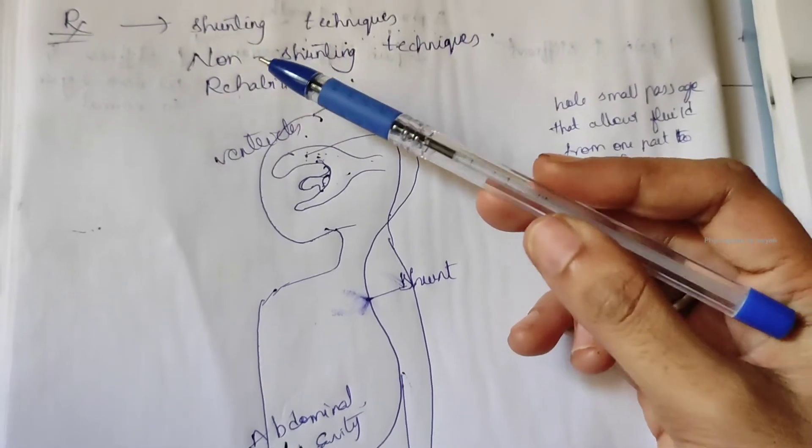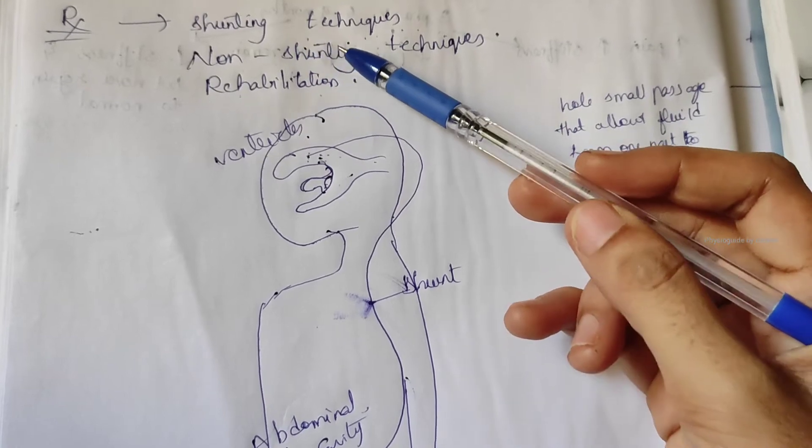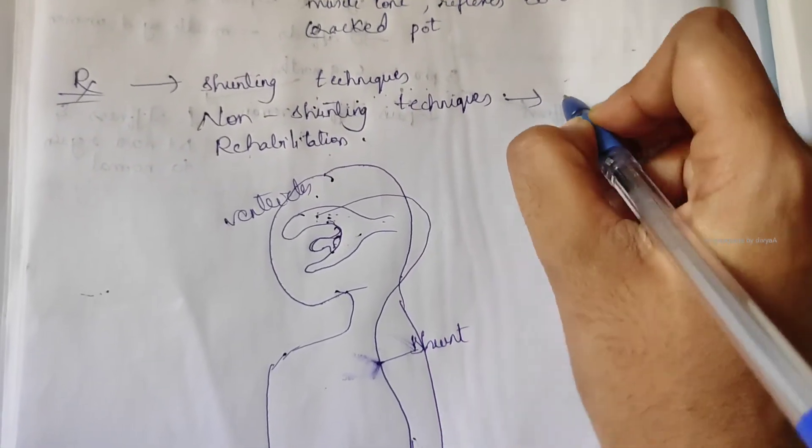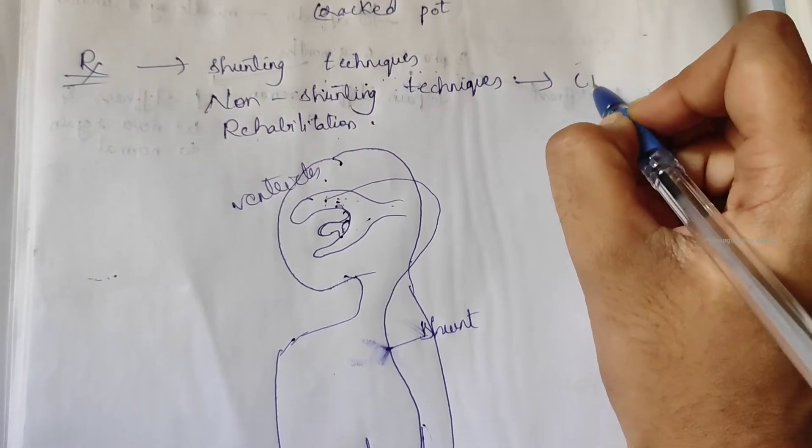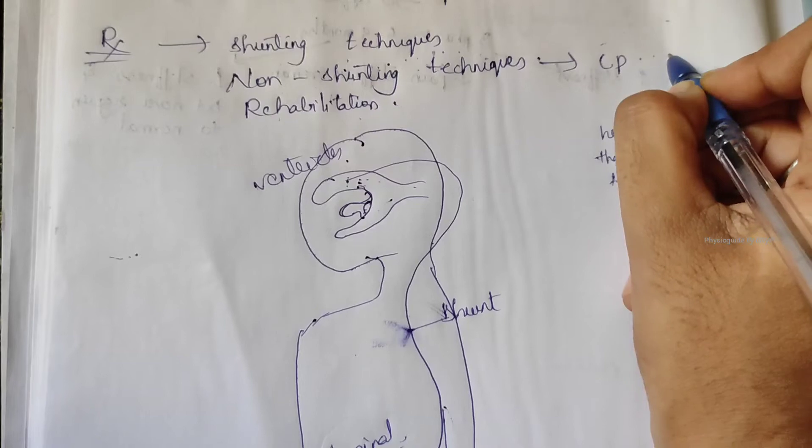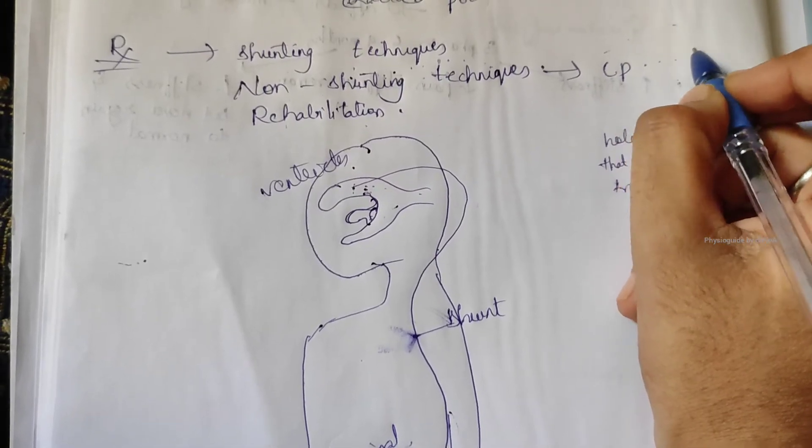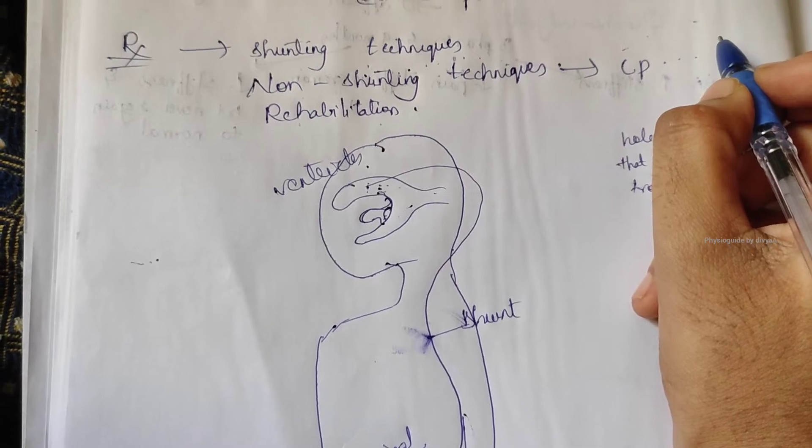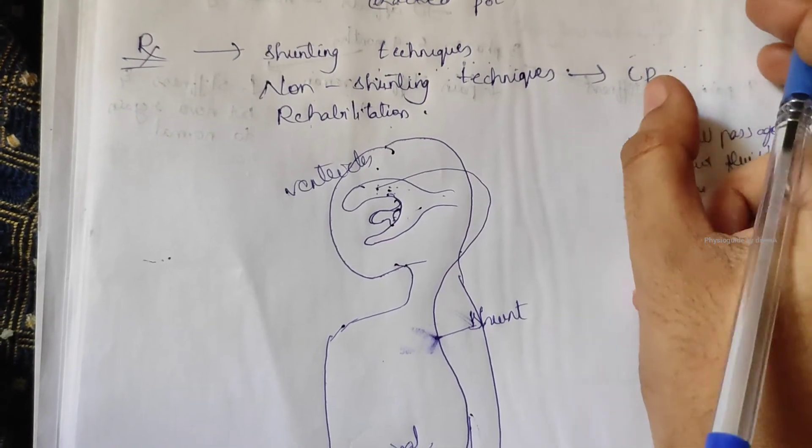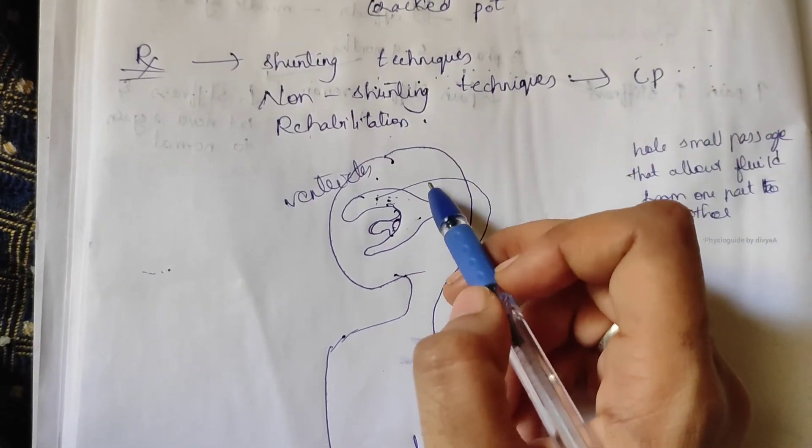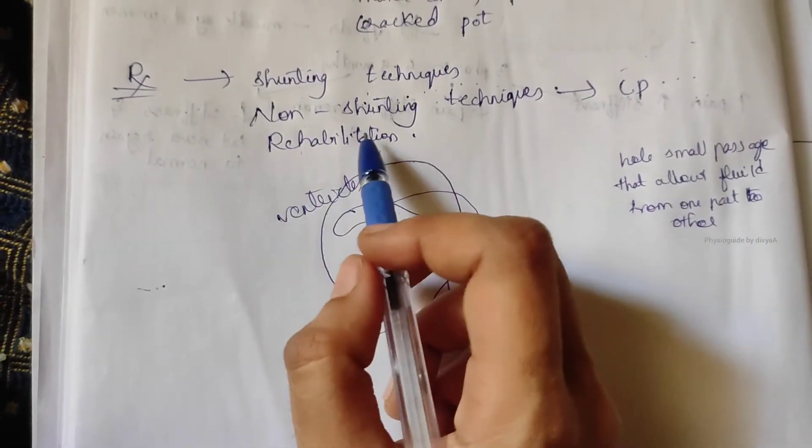Next, non-shunting technique. This technique means choroid plexotomy, removal of choroid plexus, the tissue that manufactures CSF, and the use of Rickman's reservoir and catheter. These are parts of the mechanism to drain fluid in hydrocephalus. Now, rehabilitation.